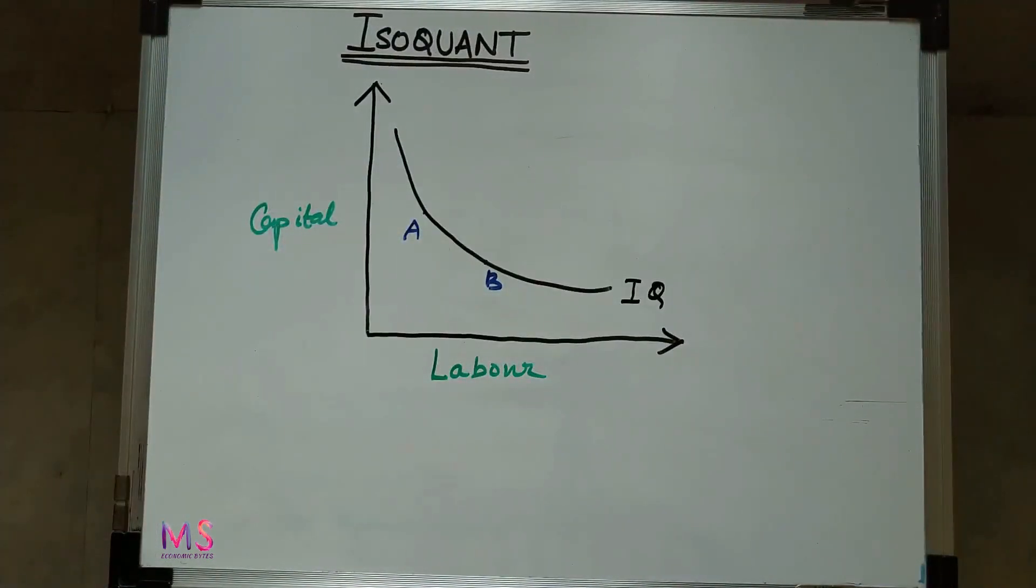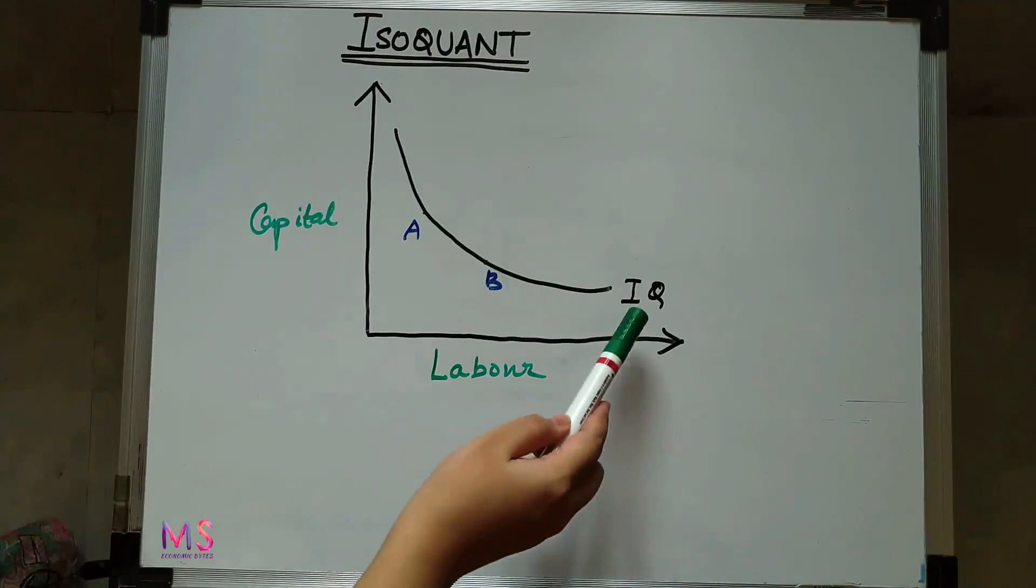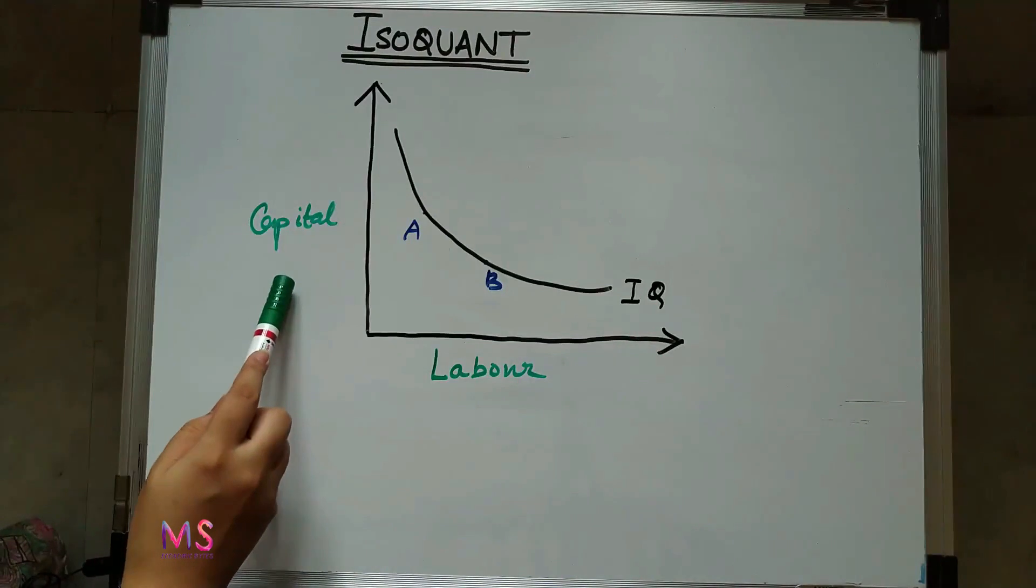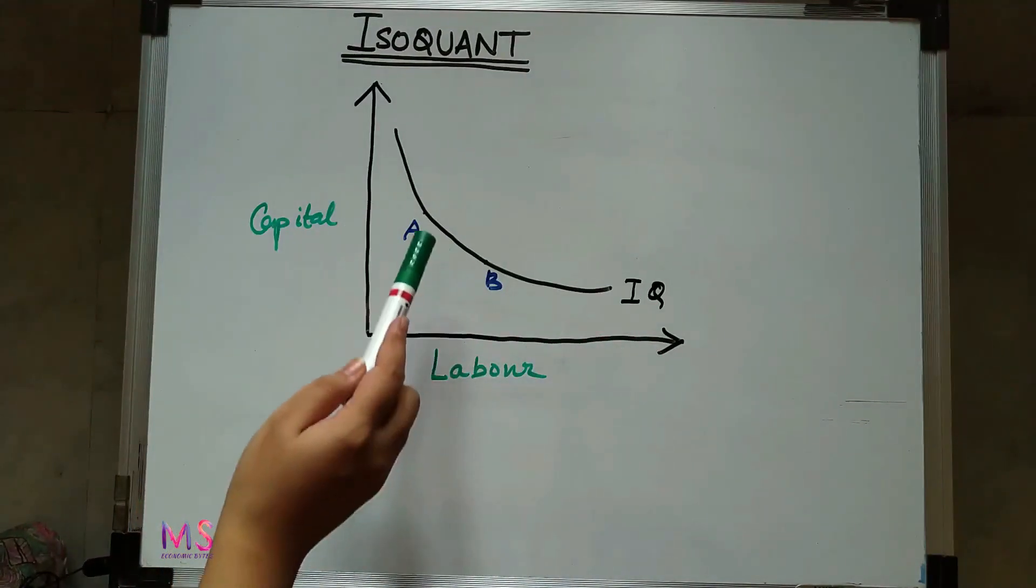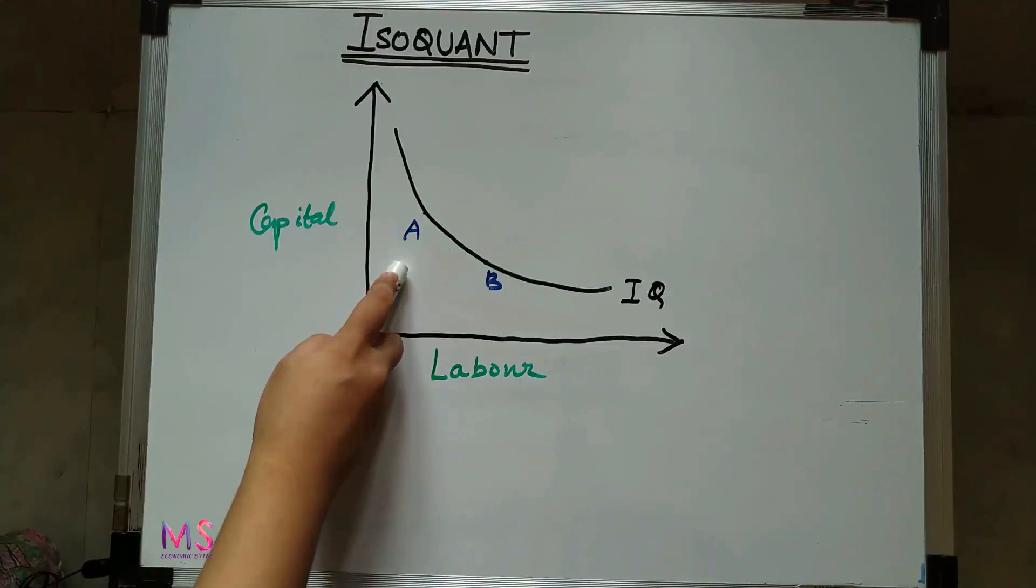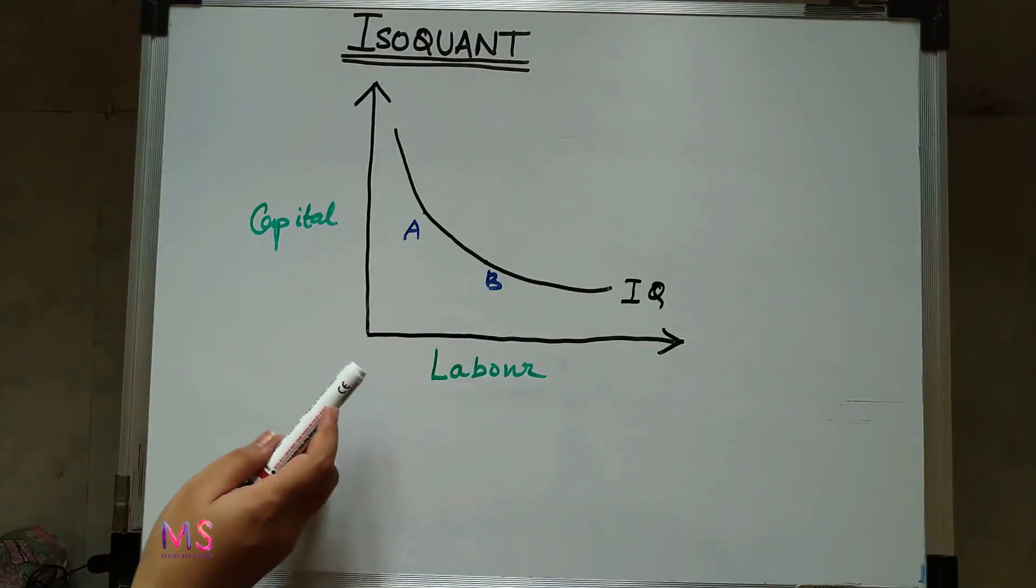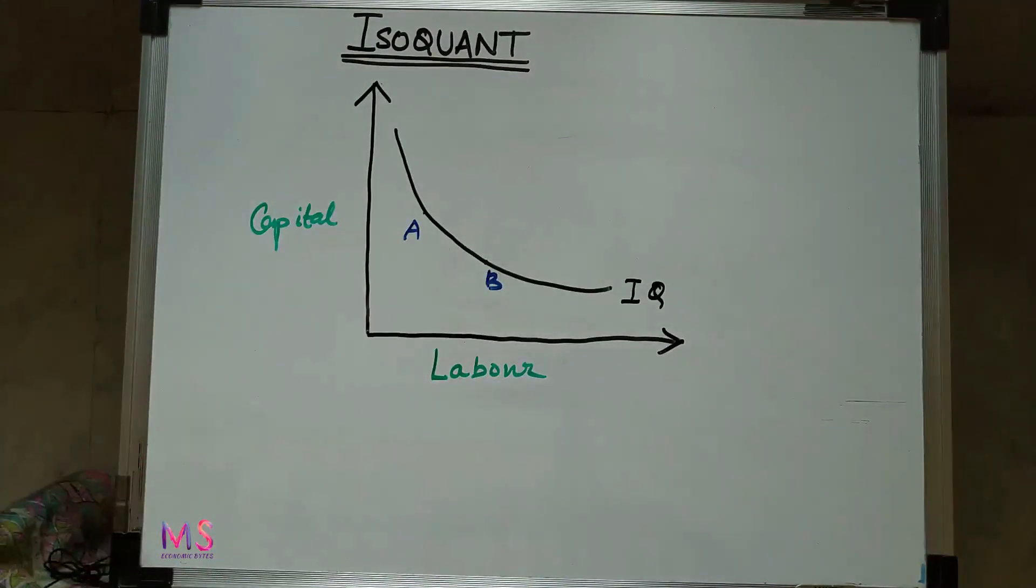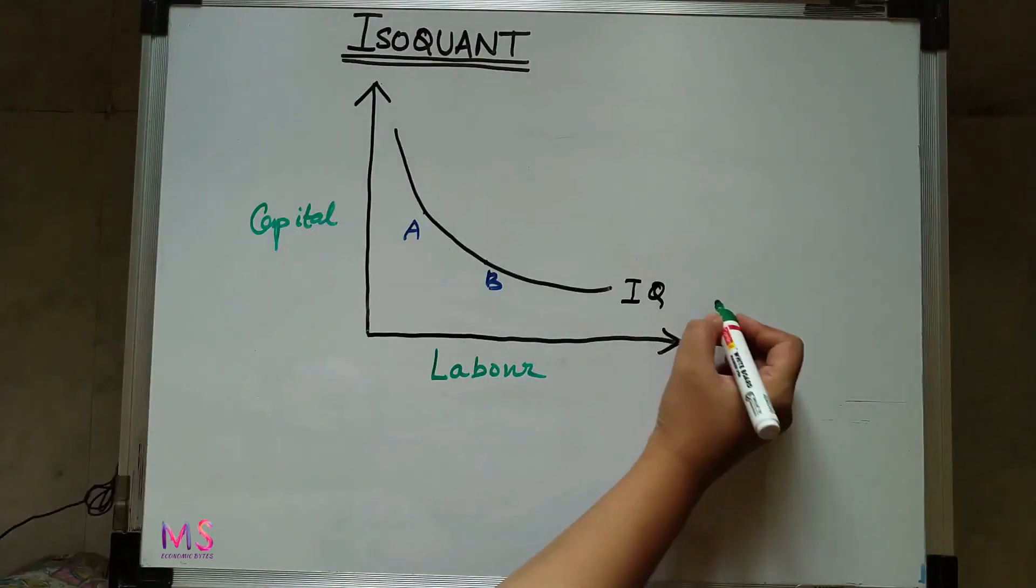Here we have taken two factors of production, labor and capital, which are shown on the x-axis and y-axis of the diagram respectively. Here IQ is the isoquant showing the various combinations of labor and capital which produce the same level of output. Point A and point B both have different combinations of labor and capital, but both produce the same level of output. Let's say that output level is 100 units.